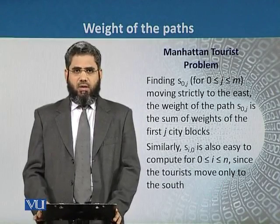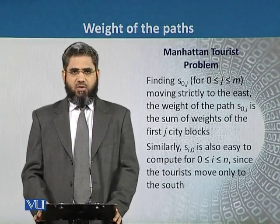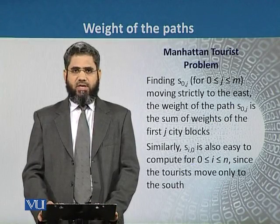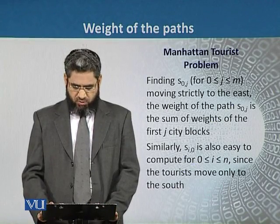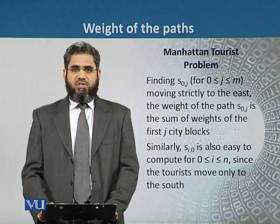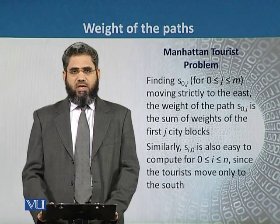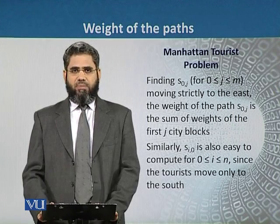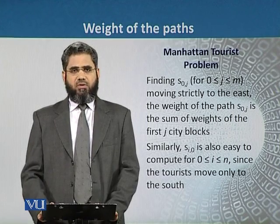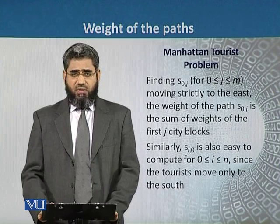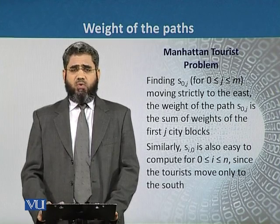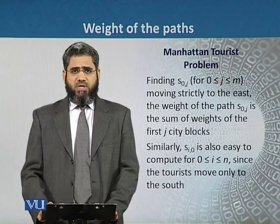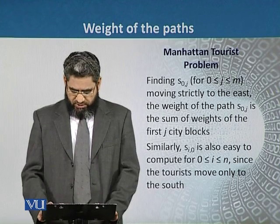We are doing the Manhattan Tourist Problem in the form of a grid. In order to find the value of S[0][j] for which 0 is less than or equal to j and j is less than or equal to M, it is not very difficult to find this value. In this case tourists do not have a choice — he or she has to move in the east direction.